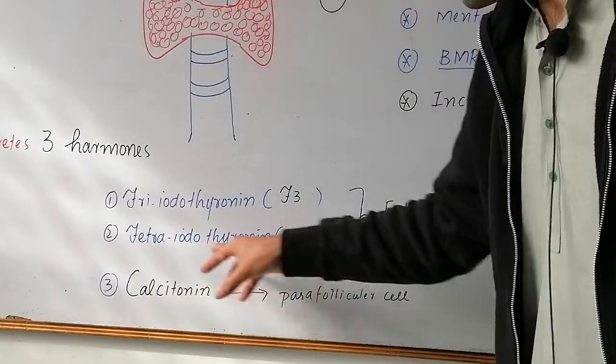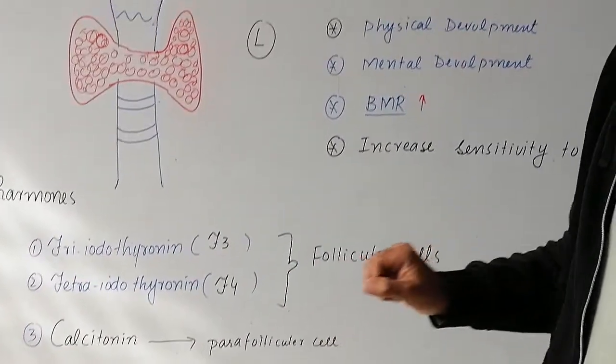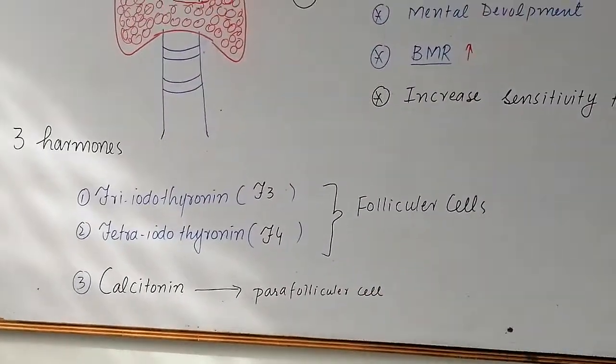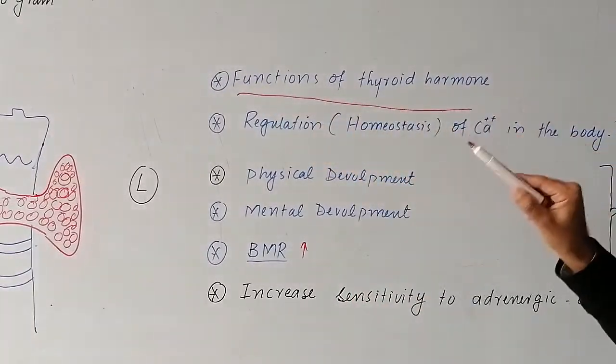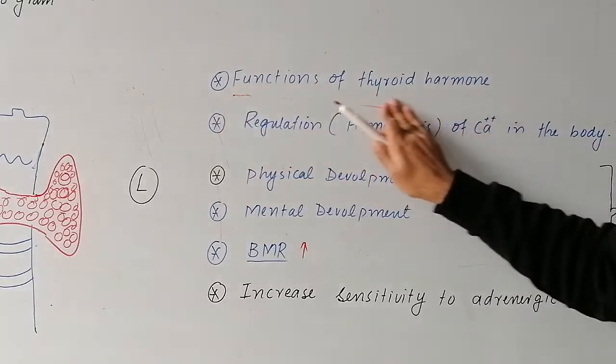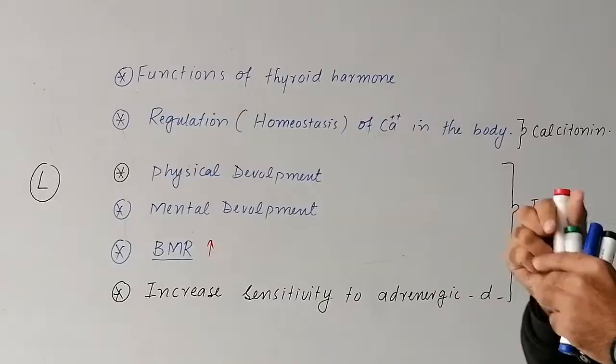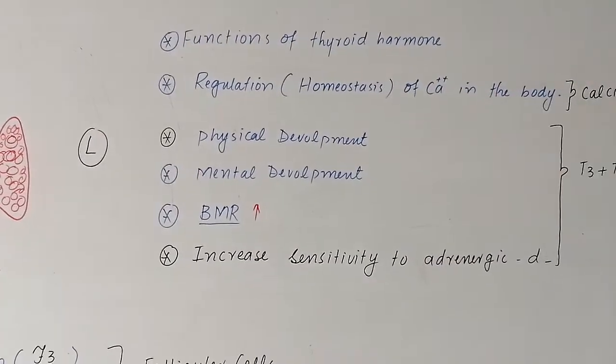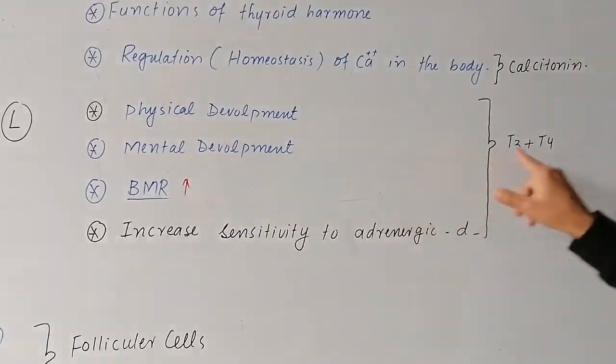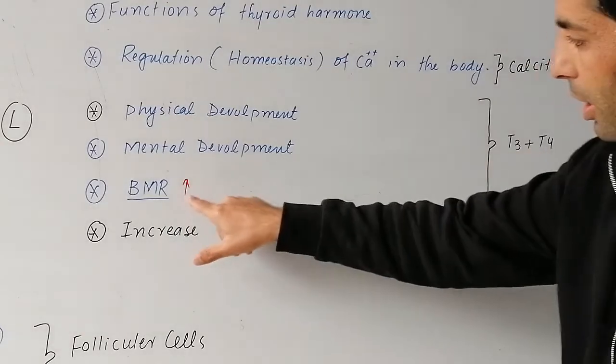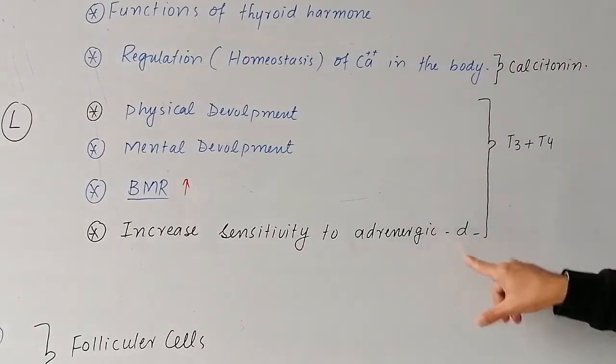What is the function of the thyroid hormone? The main functions are: regulation or homeostasis of calcium in the body by calcitonin, physical development, mental development by T3 and T4. BMR, that is basic metabolic rate, is controlled by T3 and T4. T3 and T4 also increase sensitivity to adrenergic stimuli.